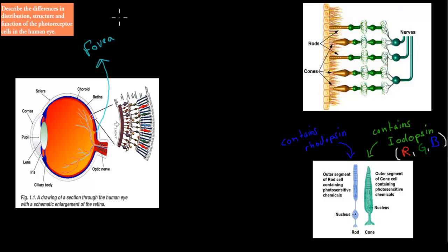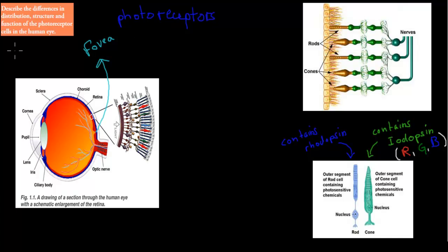In this video, we're going to talk a bit more about the photoreceptors. Remember, photo means light, and receptors means detect. The two different types of photoreceptors that we have in our body are the rods and the cones. So the rods and cones are the photoreceptors that we're going to be talking about.